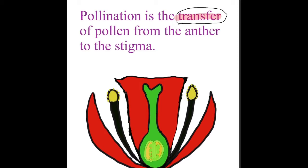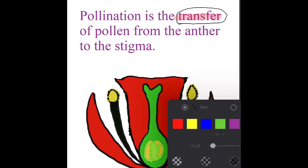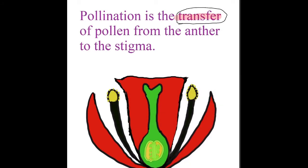The word that connects pollination to pollen is actually a key word — it is very important. What happens in pollination is that the pollen from the anther gets transferred onto the stigma like this.